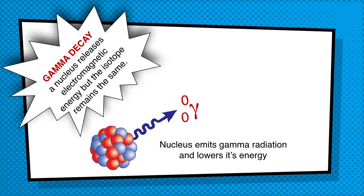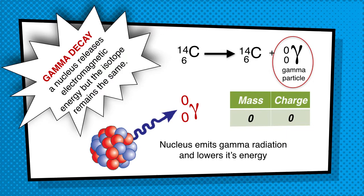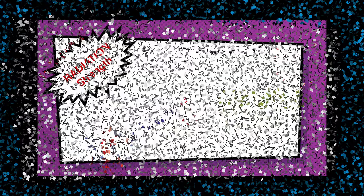The third type is gamma decay. In gamma decay, a nucleus releases electromagnetic radiation, but the isotope remains the same — essentially the nucleus emitting gamma radiation. For example, carbon-14 produces carbon-14; notice it hasn't changed, but it has given off gamma radiation, written as 0, 0 — that's all energy. The top number is the mass and the bottom number is the charge, so we would expect to see zero mass and zero charge.